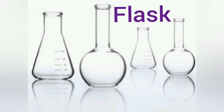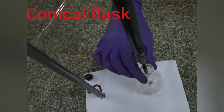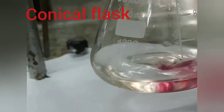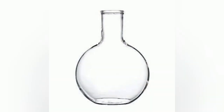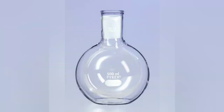A flask is a glass container with a narrow neck and broad base. Flasks are generally of three types depending on their shape. A conical flask is used to store chemicals — the contents or chemicals in a conical flask can be mixed easily. The second type is a flat-bottomed flask, which is used for mixing and storing solutions.